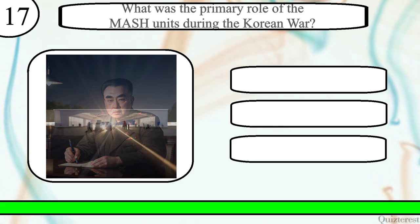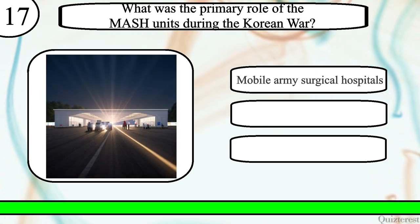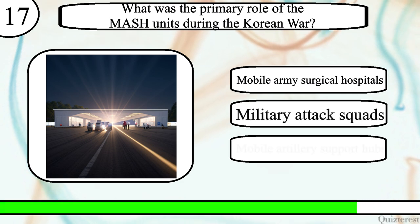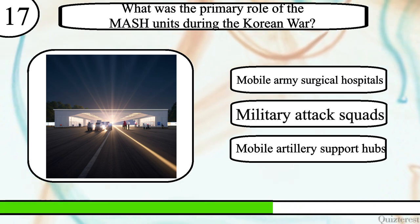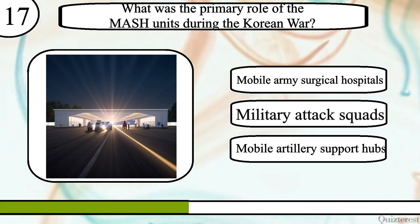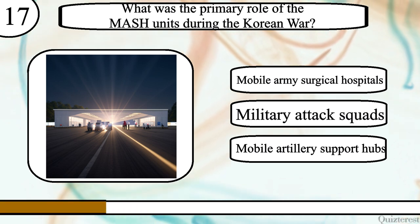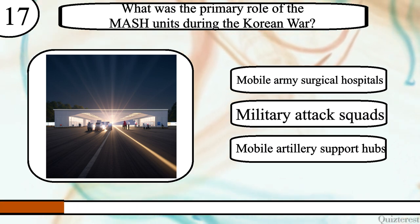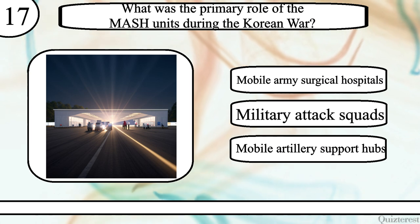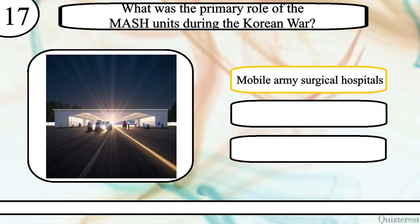Question 17. What was the primary role of the MASH units during the Korean War? Mobile army surgical hospitals, military attack squads, or mobile artillery support hubs? The correct answer is mobile army surgical hospitals.